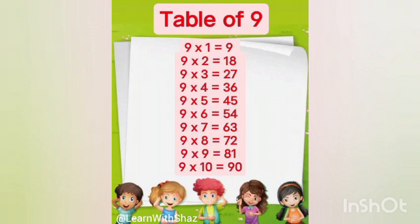9 sixes are 54. 9 sevens are 63. 9 eights are 72. 9 nines are 81. 9 tens are 90.